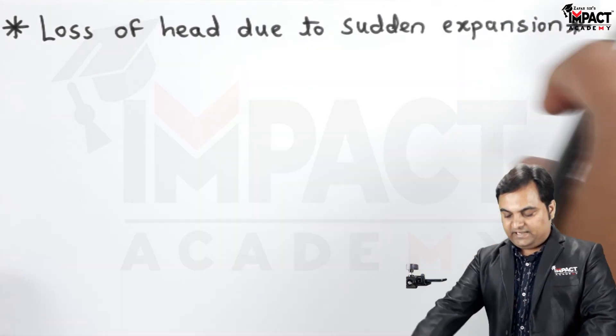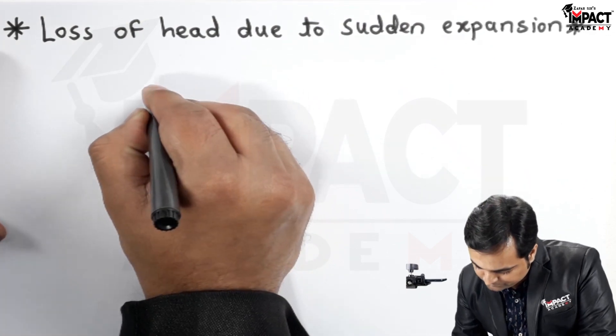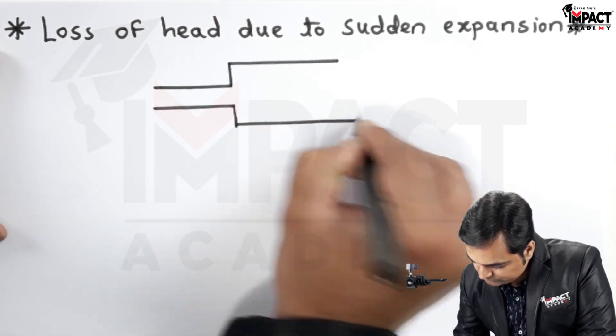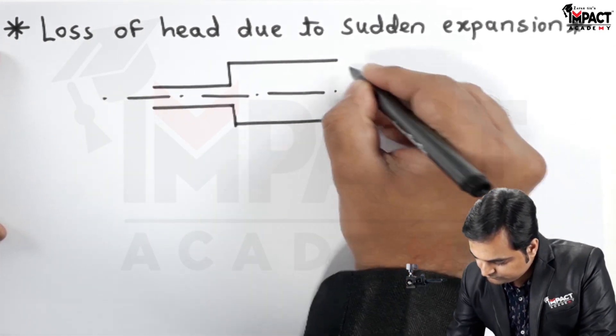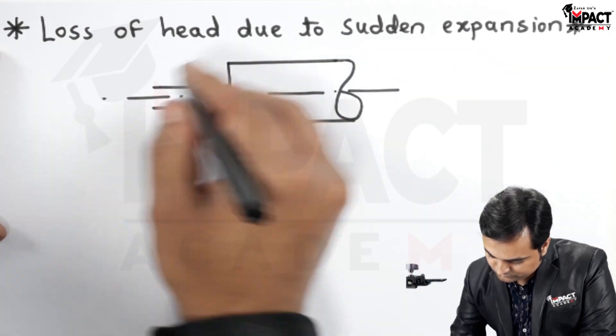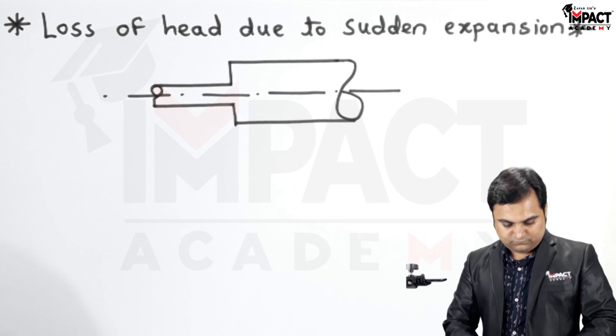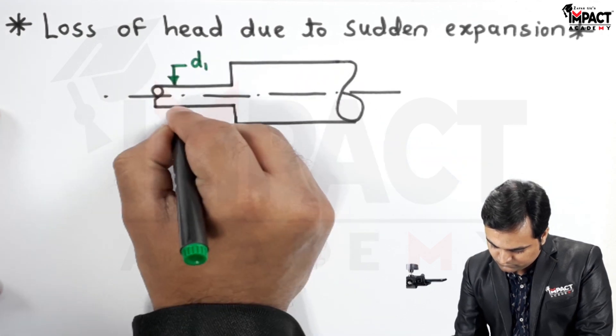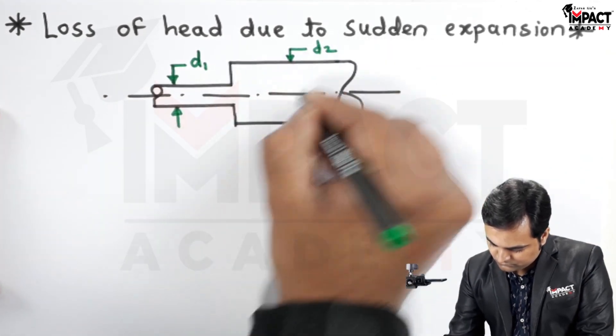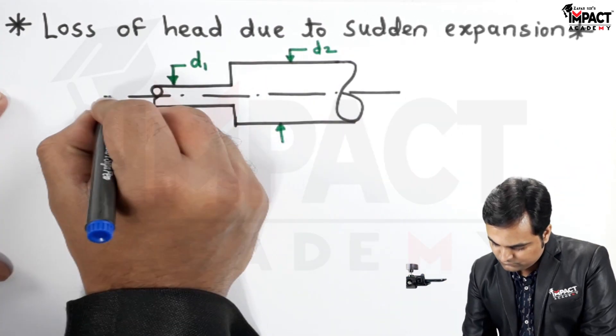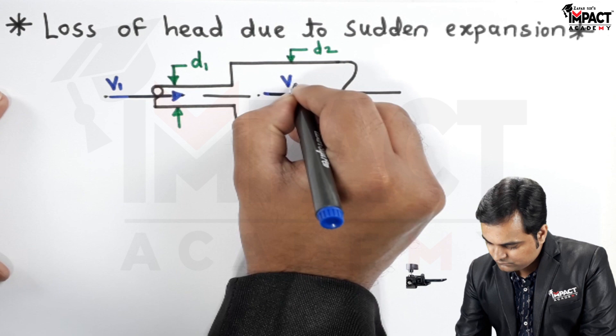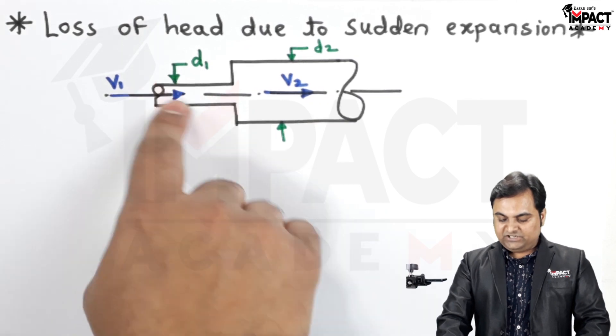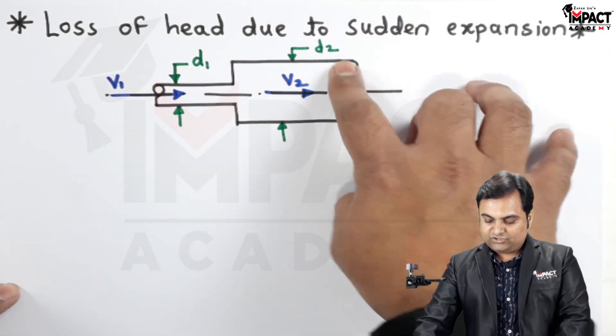For head loss due to sudden expansion, I will first draw the diagram. Here there is a pipeline. Initially the diameter is D1 and it has suddenly increased to diameter D2.